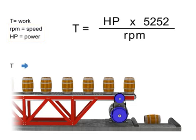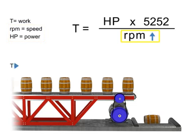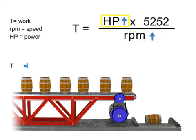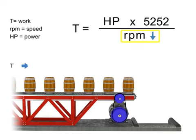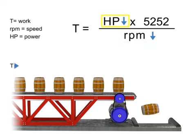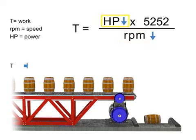As the speed, or RPM, increases, horsepower increases to maintain constant torque. If speed decreases, horsepower decreases to maintain constant torque.